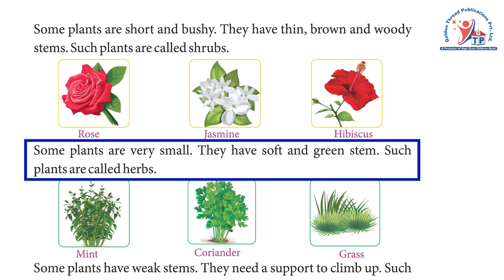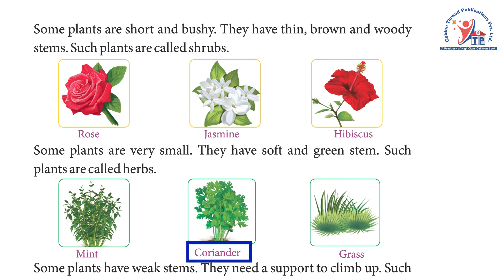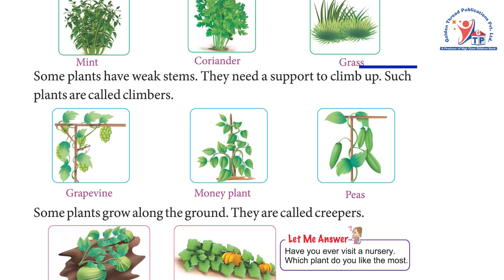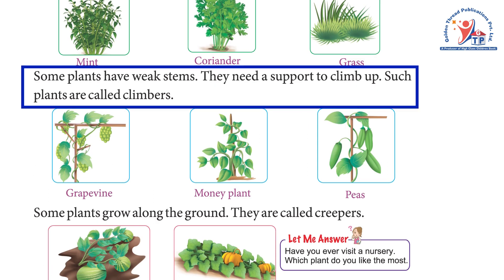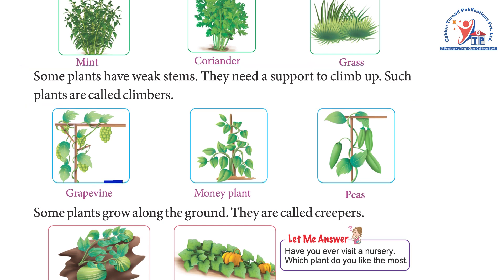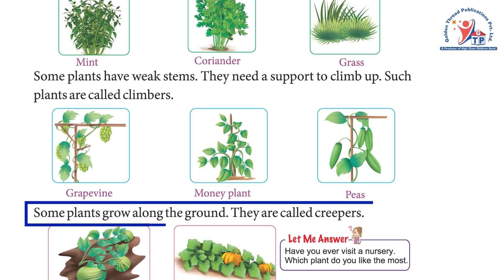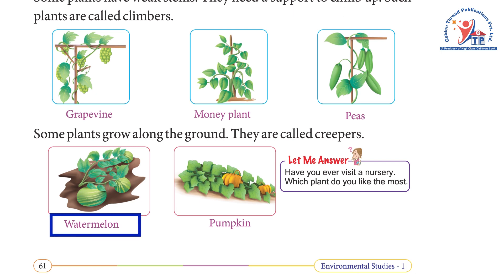Some plants are very small. They have soft and green stems. Such plants are called herbs — mint, coriander, and grass. Some plants have weak stems and need a support to climb up. Such plants are called climbers — grapevine, money plant, and peas.